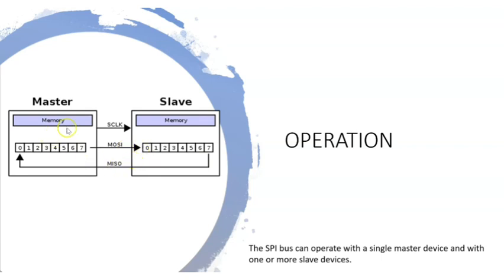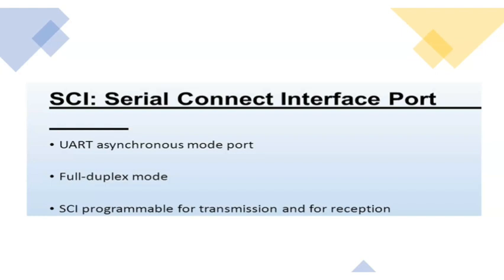In SPI communication, there is one master and multiple slaves. The clock is given by the master. Through the MOSI pin, data is sent from master to slave, and the master receives data through the MISO pin. That is how SPI operation works. To study SPI, you need to learn the signals, their meanings, their abbreviations, and draw a simple diagram.